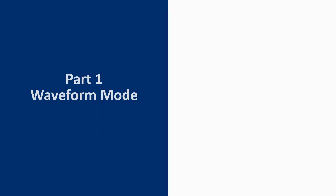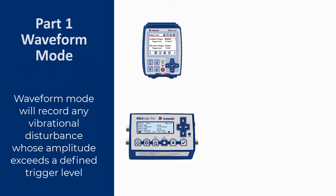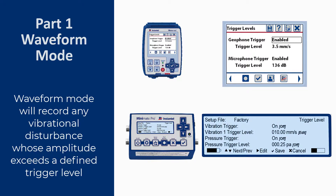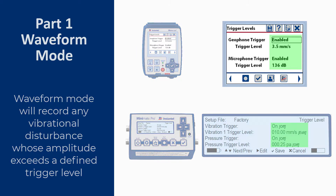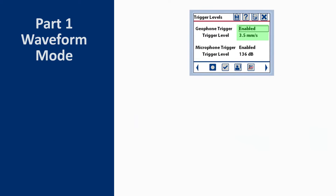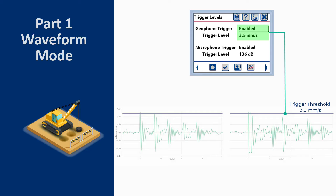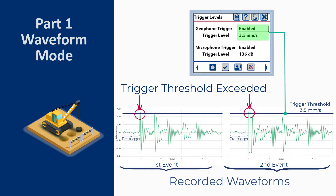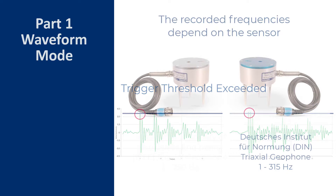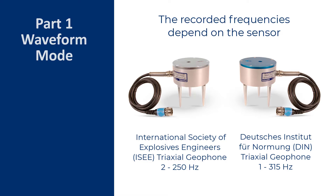The first record mode is Waveform. Waveform mode will record any vibrational disturbance whose amplitude exceeds a defined trigger level. This is true for both Micromate and Minimate units. We will continue with the Micromate interface for this presentation. Once one of these signals exceeds the trigger level, the unit will start recording the data. The recorded frequencies depend on the sensor being used — for example, an ISE triaxial geophone will record 2 to 250 Hz signals, whereas a DIN triaxial geophone will record 1 to 315 Hz signals.